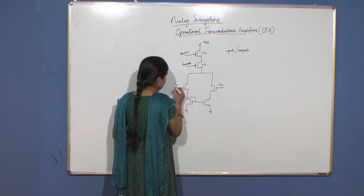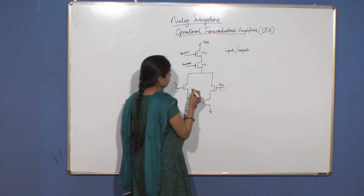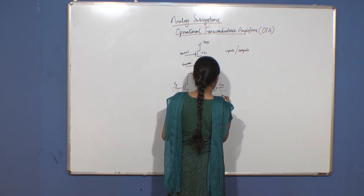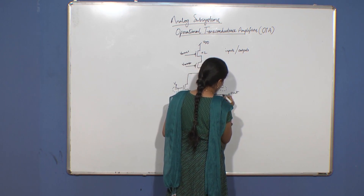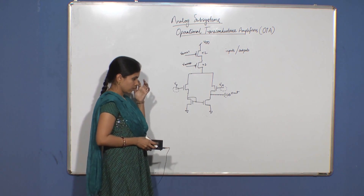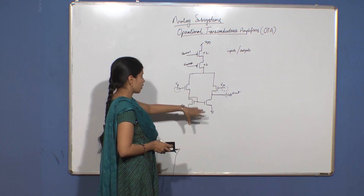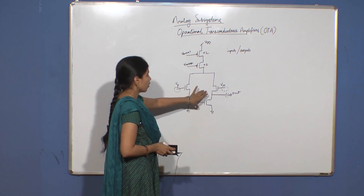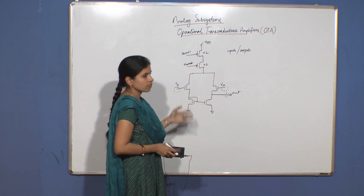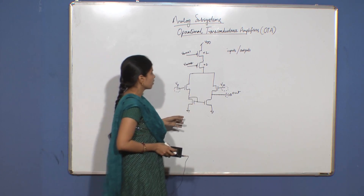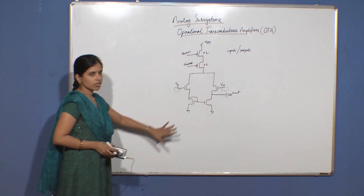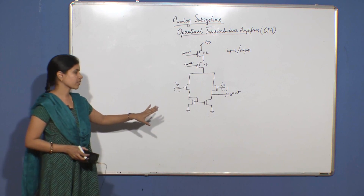You have the two inputs as high impedance nodes and the output as a high impedance node. When designing an operational transconductance amplifier, you must ensure that you do not connect high impedance nodes to a low impedance path. Other than the output and the inputs, there should be no high impedance nodes in your differential pair for it to qualify as an OTA.